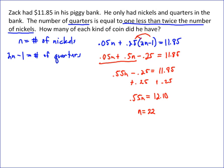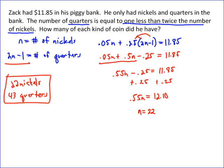The number of nickels is equal to 22, so the answer is 22 nickels. The number of quarters is going to be 22 times 2, so 44 minus 1, which gives you 43 quarters. The answer is 22 nickels and 43 quarters.